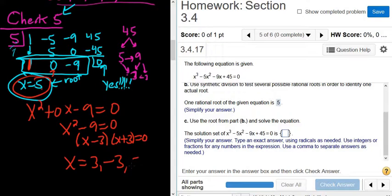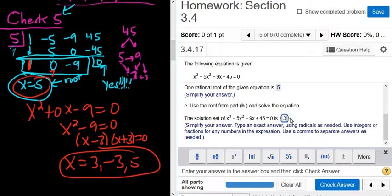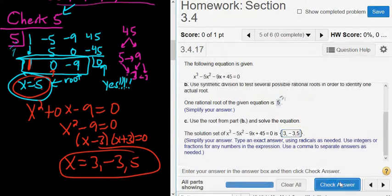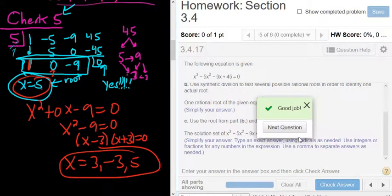So the other answer is 5. So we need to include that one as well in our answer. So this would be 3, negative 3, 5. Let's try it. Yep. Good stuff. Hope that made sense.